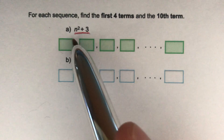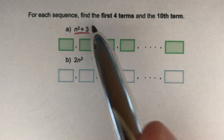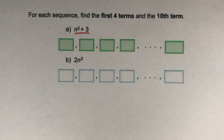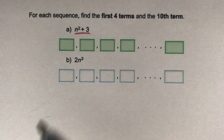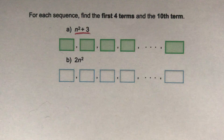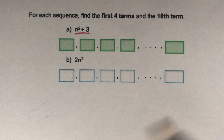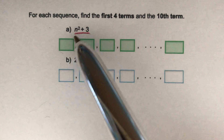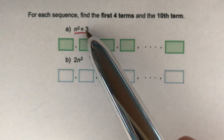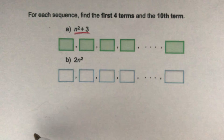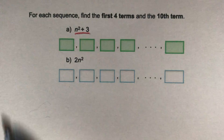Our first sequence has the nth term n squared plus 3. What this means is that for each term, we take the number of that term, we square it — multiply it by itself — and then we add 3 to whatever we get.